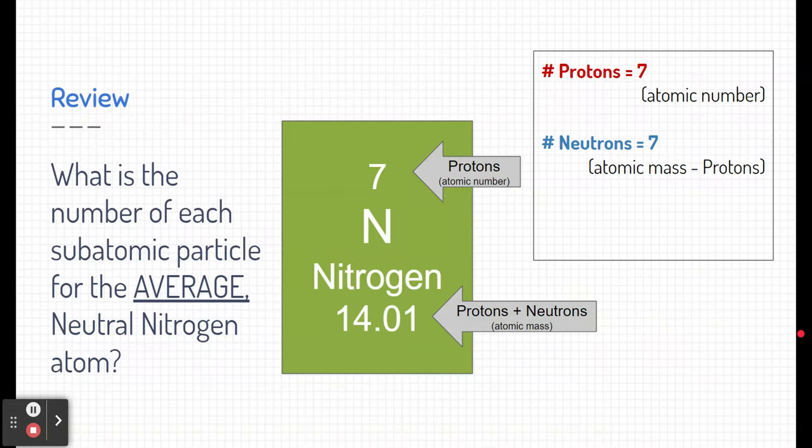How about electrons? Well, the periodic table does not tell us anything about the number of electrons, but we do know something about this nitrogen. It says here that it is neutral.